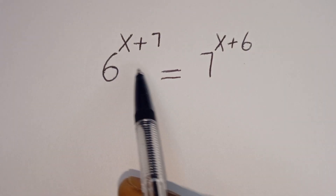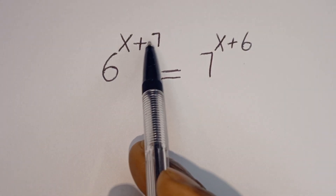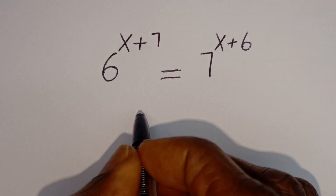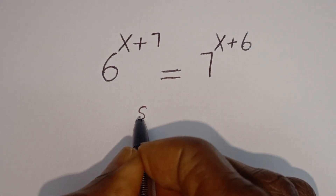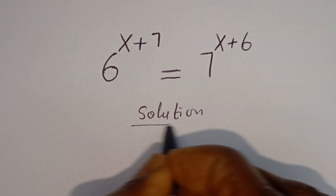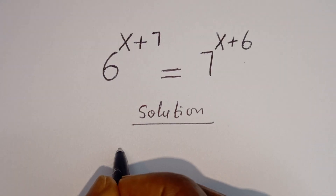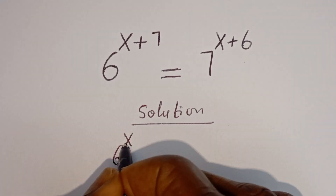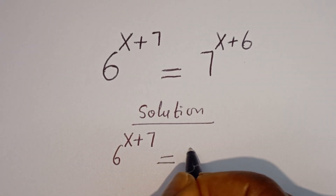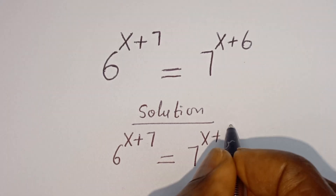Hello. How to solve for x in this equation: 6 to the power of x plus 7 is equal to 7 to the power of x plus 6. Solution. Here we have the given equation: 6 to the power of x plus 7 is equal to 7 to the power of x plus 6.